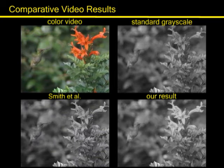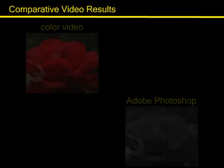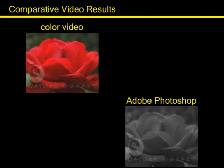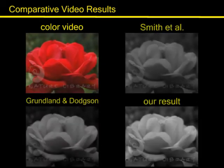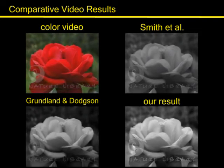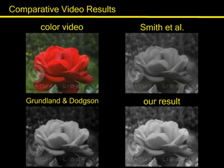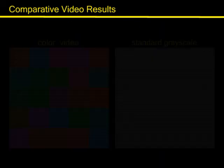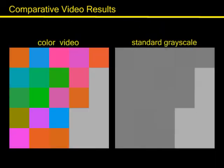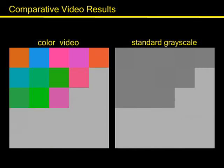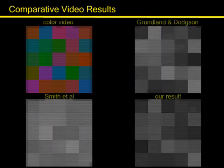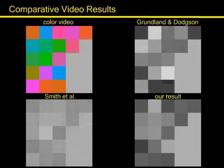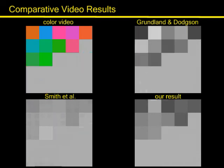Notice our conversion result of the red flower. Even for this challenging synthetic video, our technique is well able to preserve the temporal coherence. Notice the artifacts introduced by Smit et al.'s technique, but also the aleatory grayscale mapping yielded by Grundlund and Dorchen's method.